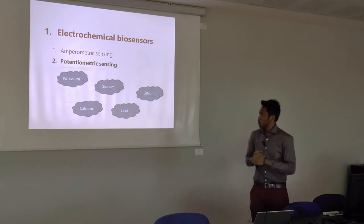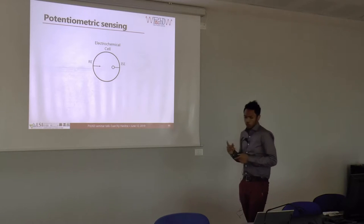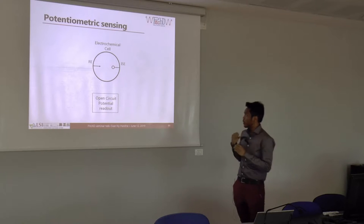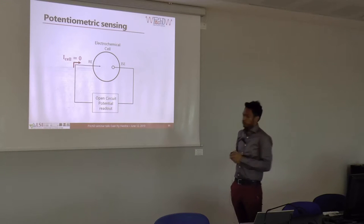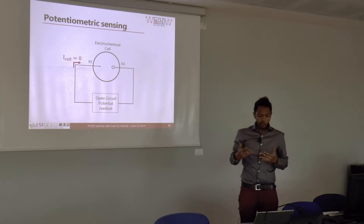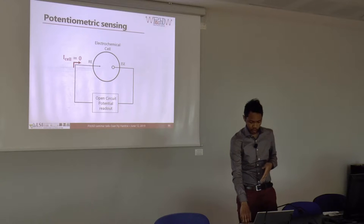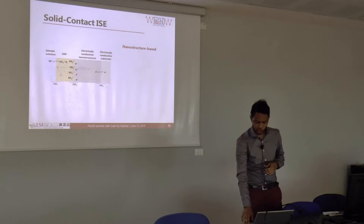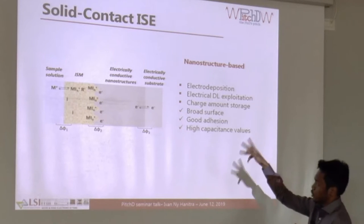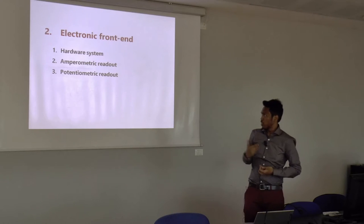The second family of molecules we can measure is ions, using potentiometric sensing. In this case we have two electrodes: one ion-selective electrode (ISE) functionalized to selectively trap the ions we want to measure, and we measure the potential against an inert reference electrode. Measurements are done in open-circuit conditions — no current is supplied to the cell. The ion-selective electrode uses nanostructures and selective membranes to transduce the ion-to-electron signal and observe the change of potential at the back end.